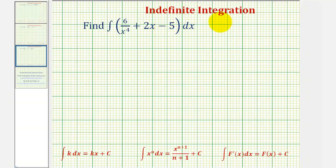We want to perform indefinite integration or find the anti-derivative of six divided by x to the fourth plus two x minus five, which means we're looking for a family of functions that have a derivative of this given function. To do this, we'll be applying these two integration formulas.